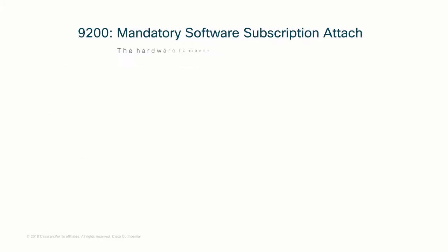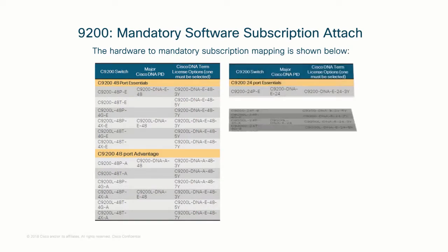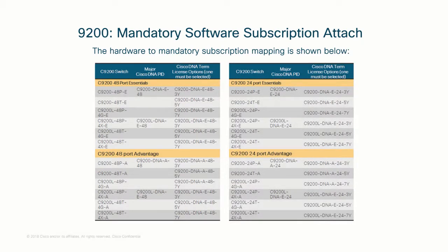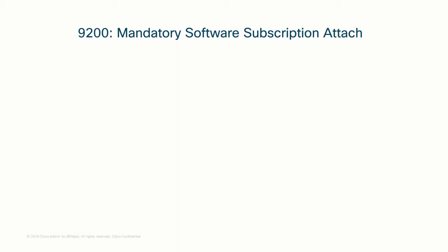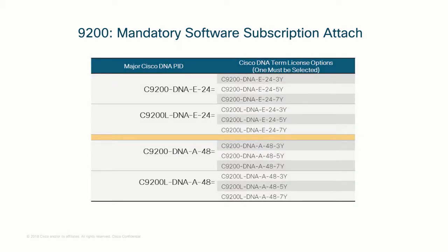Continuing on our example of Cat9200, here is a quick view of the hardware to mandatory subscription mapping for Cat9200 product family for a dropship entire order. If you are fulfilling hardware from inventory and ordering mandatory subscriptions separately from Cisco, note that the product IDs are differentiated with an equal-to sign.